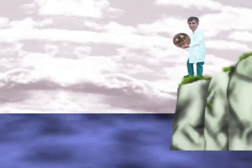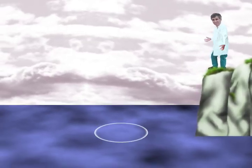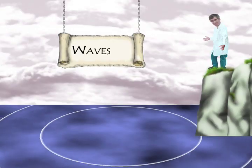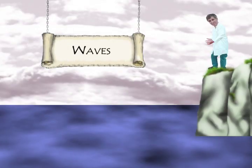All waves travel outward from a source. A stone dropped in a pond, for instance, will produce waves that move out in a circular pattern from the splash.